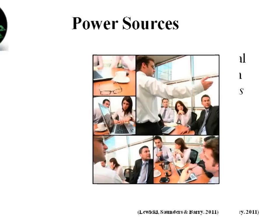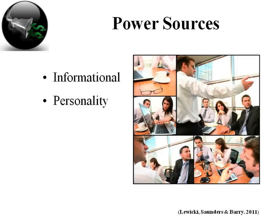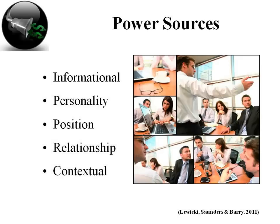There are a number of power sources. French and Raven identified five major types back in 1959: expert, reward, coercive, legitimate, and referent. Informational power — data we've already gathered, researched, and organized — operates at our expert level. We also have personality sources of power, power based on position in an organization, relationship-based sources of power, and contextual sources of power.